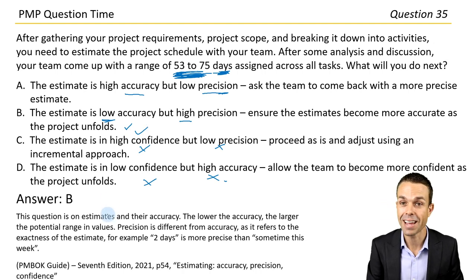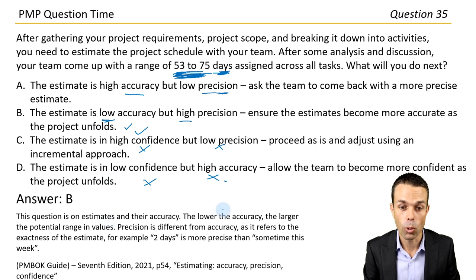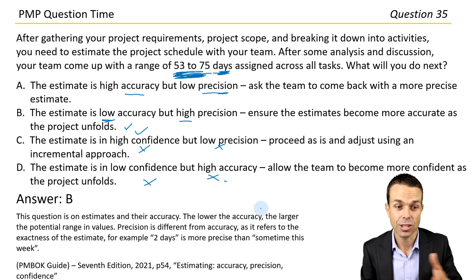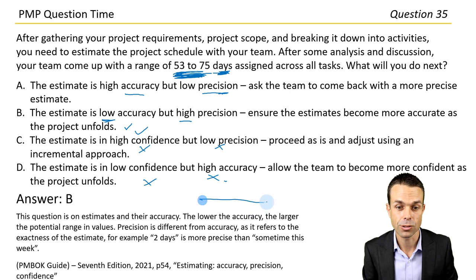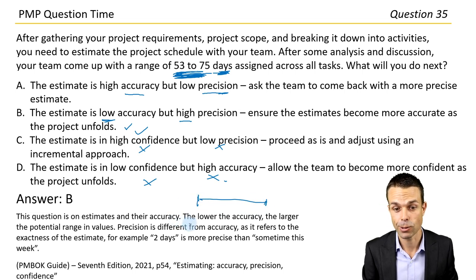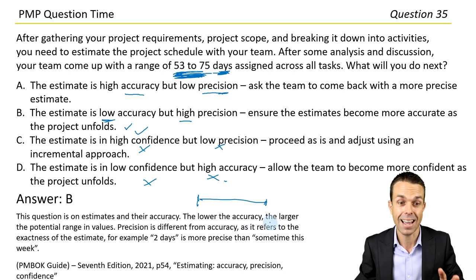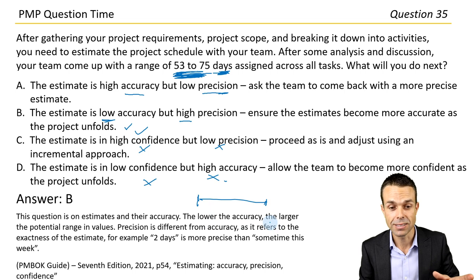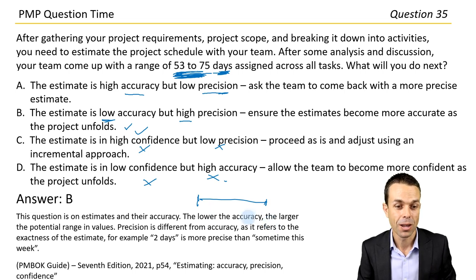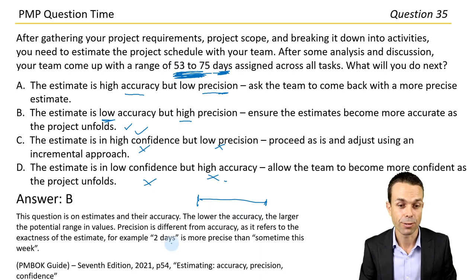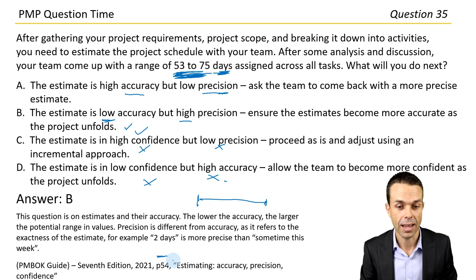This question is on estimates and their accuracy. The lower the accuracy, the larger the potential range in values — that's what we're seeing. Precision is different from accuracy as it refers to the exactness of the estimate. For example, two days is more precise than sometime this week. PMBOK Guide 7th edition, page 54, under estimating accuracy, precision, and confidence.